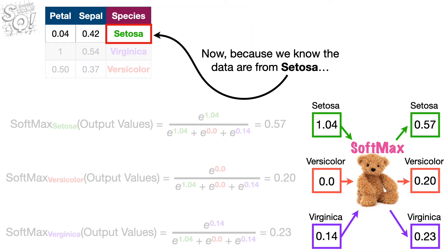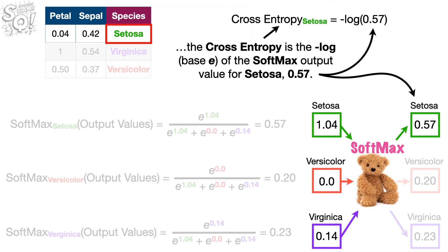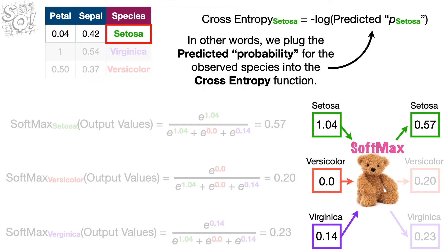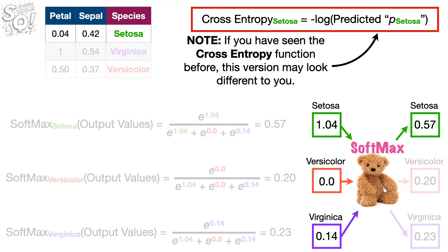Now, because we know the data are from Setosa, the cross entropy is the negative log, base e, of the SoftMax output value for Setosa, 0.57. In other words, we plug the predicted probability for the observed species into the cross entropy function.